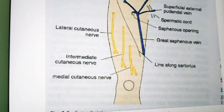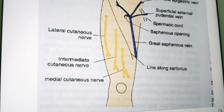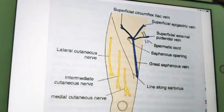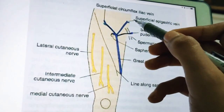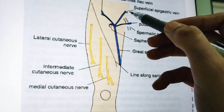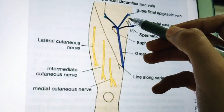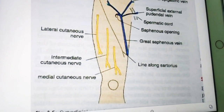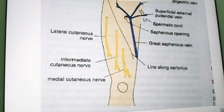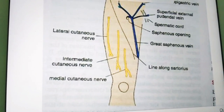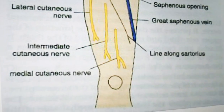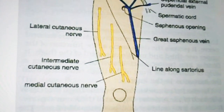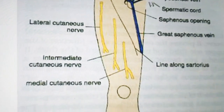The skin of the thigh in the region around the pubic symphysis is studded with hair. Just lateral to the groin on the medial side, the thigh region is studded with hair. With this we have completed the surface landmarks of the front of thigh, and next we will start with the superficial fascia.